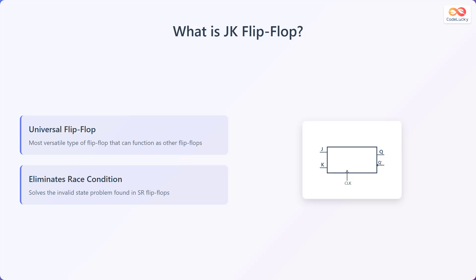As you can see in the diagram, the JK flip-flop has two inputs, J and K, and a clock input. The outputs are Q and Q'.